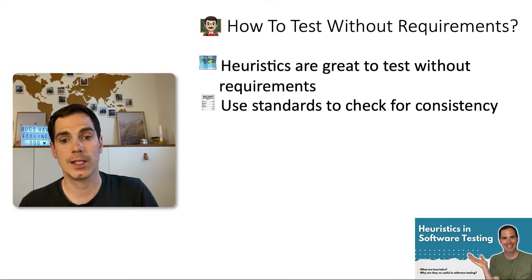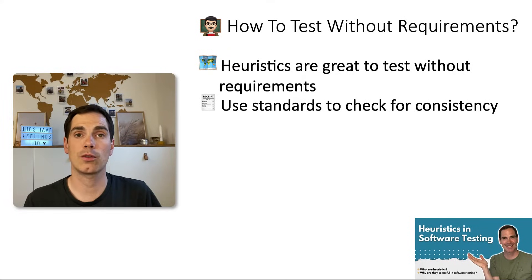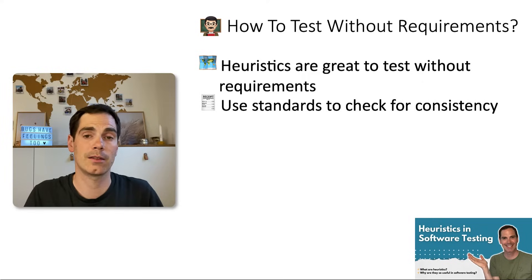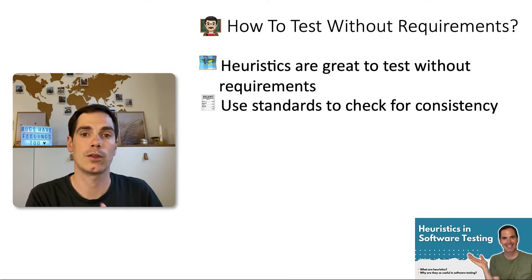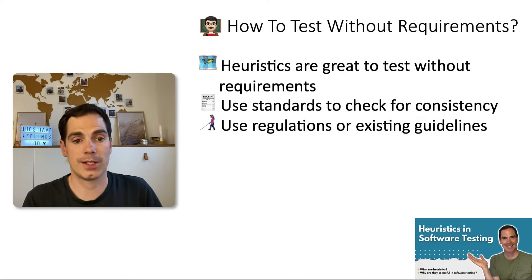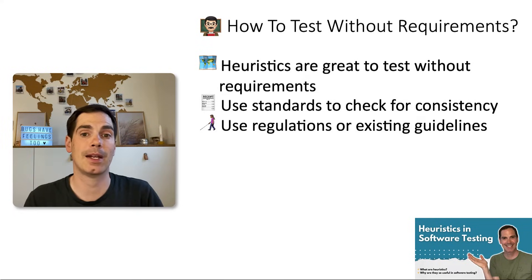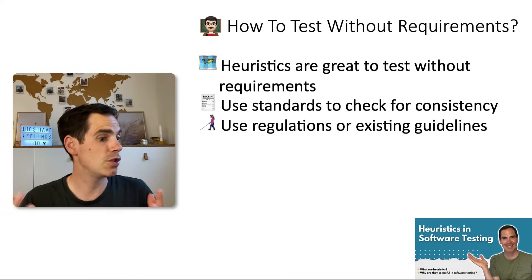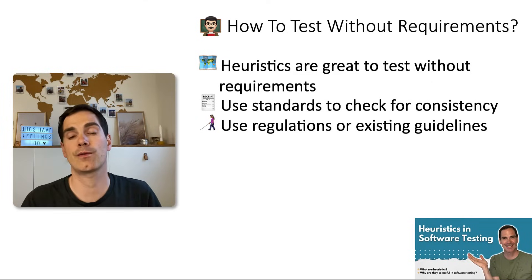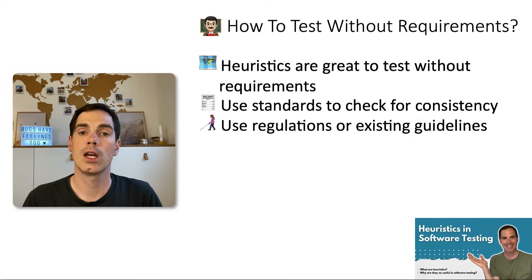You can also use standards to check for consistency. If you're working in a regulatory environment, use the standards documented by the central institution and test against them when you don't have requirements in your tickets or user stories. Similarly, use regulations or existing guidelines — there might be guidelines for accessibility or usability, and if we take a quick dive into mobile, there are also UI and development guidelines from Apple and Google for Android and iOS that you can test against.